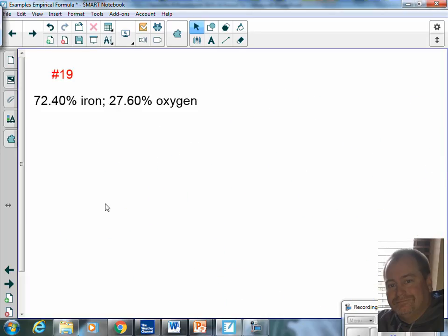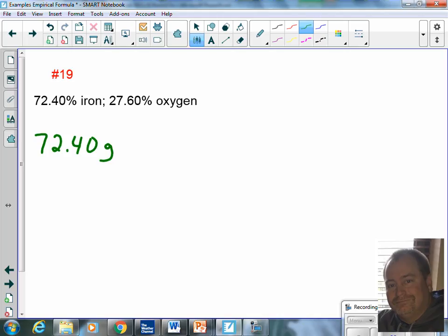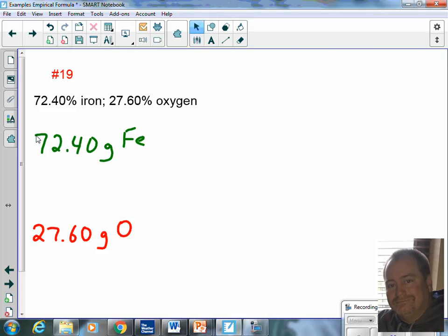I'll give you a second to write down the next value. Once again, I've given percentages here, so I'm going to say that 72.40 grams of iron and 27.60 grams of oxygen. Because if I have percentages, I'm just going to pretend like I have a hundred grams of the substance.